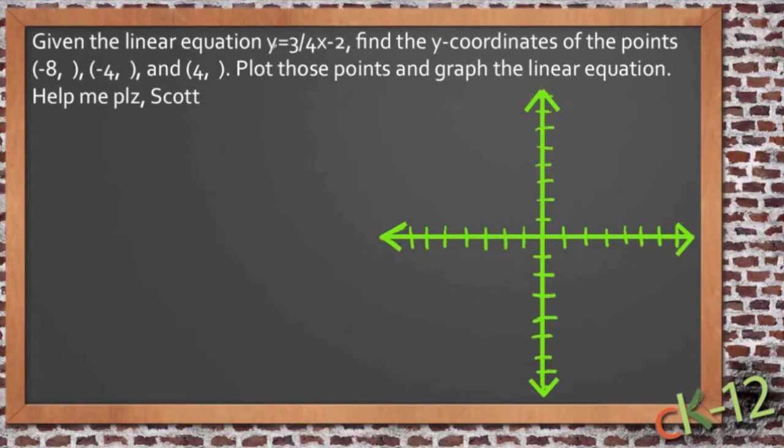Alright, Scott wrote in here with a linear equation problem. He says that given the linear equation y equals 3 quarters x minus 2, he needs to find the y coordinates of the points negative 8 something, negative 4 something, and positive 4 something. And he's supposed to plot these points and then graph the linear equation.